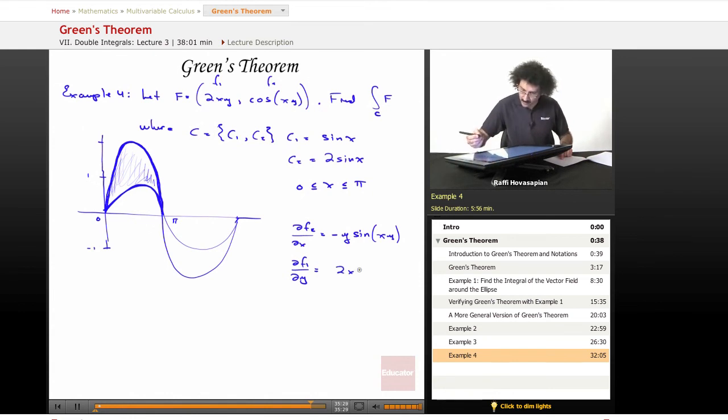And if I take df1 dy, I'm going to end up with 2x. Therefore, my integrand, so this minus that, so my df2 dx minus df1 dy, which is my integrand under my double integral, is going to equal minus y times the sine of xy minus 2x.